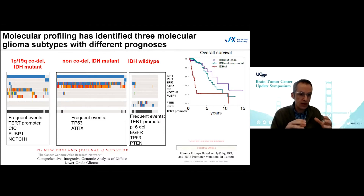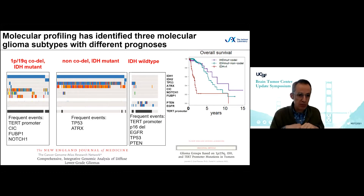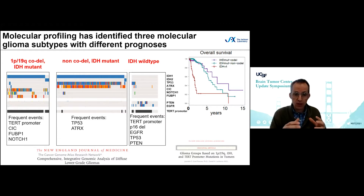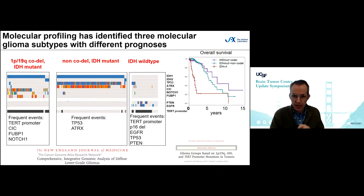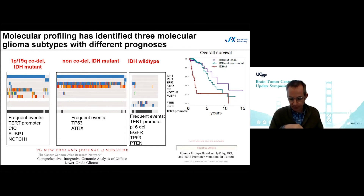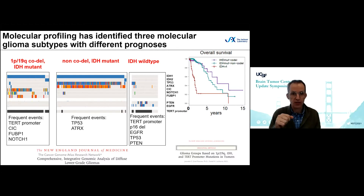Not only do these three molecular subtypes differ strongly in patient outcomes, but also in their biology. The 1p19q codel group, predominantly oligodendrogliomas, contains many mutations in genes such as CIC and FUBP1, which are rare in the other two subtypes. ATRx and p53 events are highly frequent in non-codels, predominantly astrocytomas. The IDH wild-type group — essentially glioblastoma — contains p53 mutations as well as EGFR amplifications, PTEN loss, and so forth.